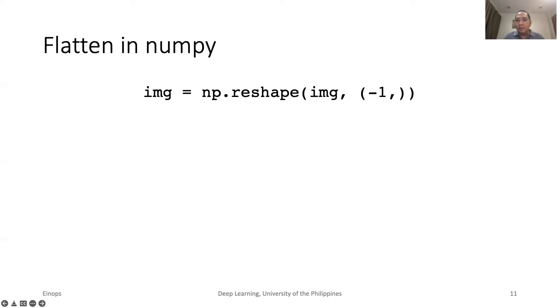We can get the same results in NumPy by calling reshape. In this case, we use negative 1, 1D shape. NumPy figures out the correct size. For conciseness, in the succeeding slides, we will just focus our examples on EinOps functions.